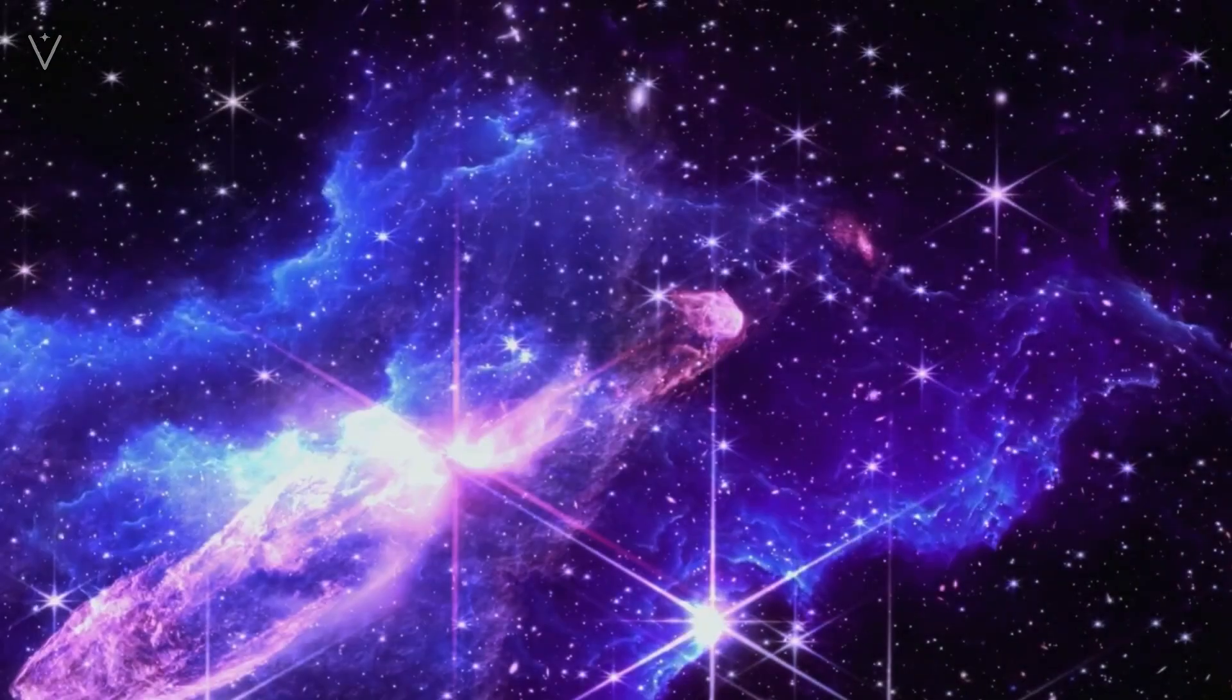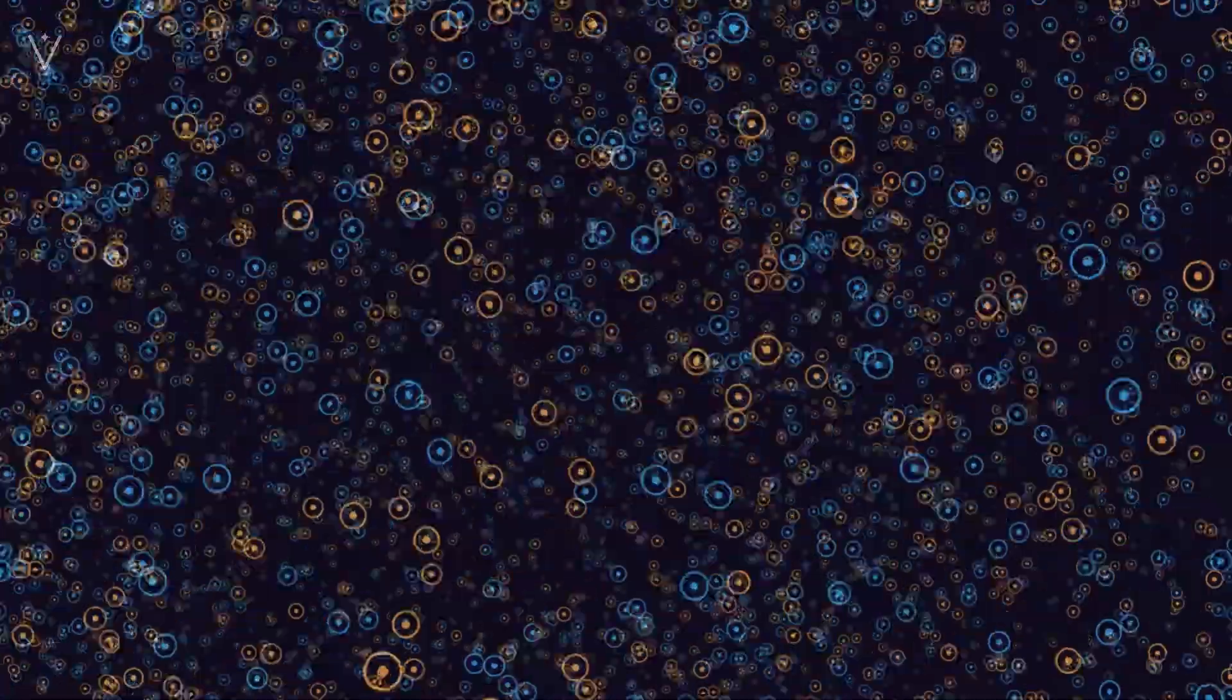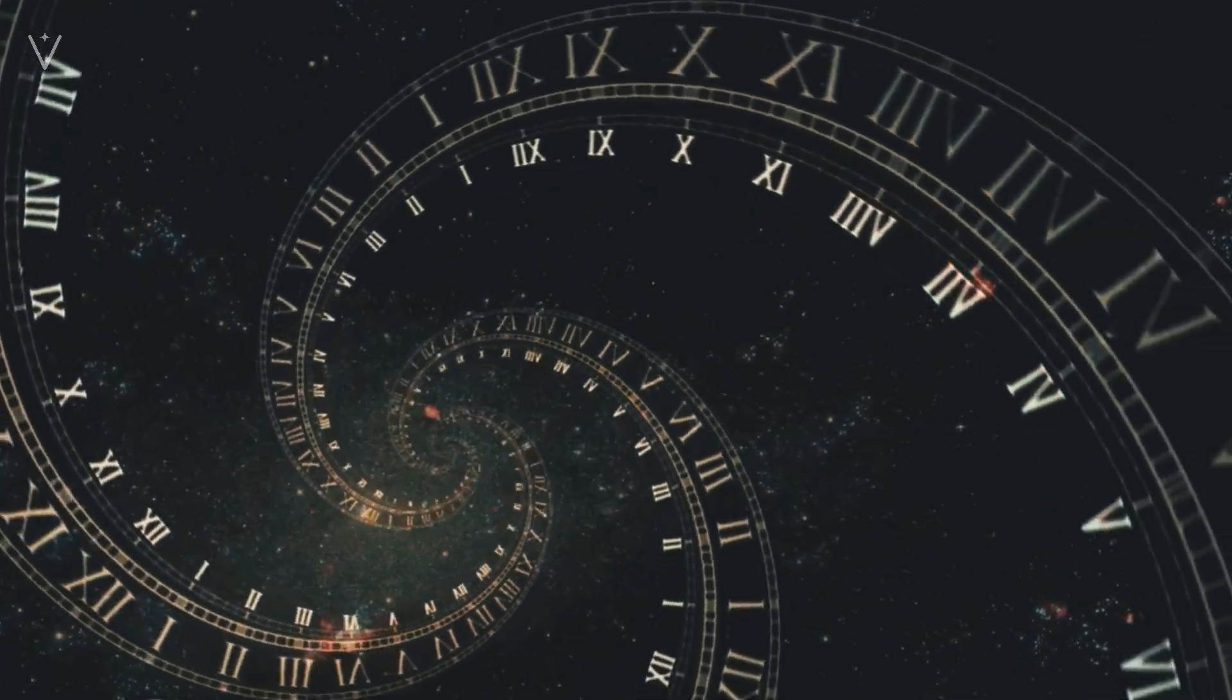Let's talk about dark matter. We know it's there because of its gravity. Galaxies are spinning so fast that they should fly apart. The gravity from the stars and gas we see isn't enough to hold them together. There must be something else, something invisible, providing the extra gravity. That something is dark matter.